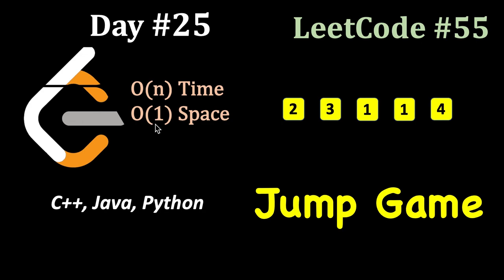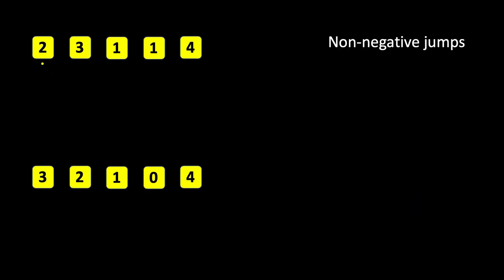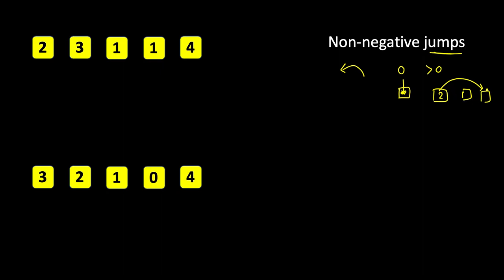First let's understand the problem. We have some blocks, or you can think of them as an array of numbers, and these numbers are non-negative and denote jumps. So either it can be zero or greater than zero. If it's zero and you are at a particular step, that means you are stuck there and cannot jump any further. But if the jump size is 2, then you have the flexibility to jump maximum up to 2 steps — you can jump to the first block or the second block.